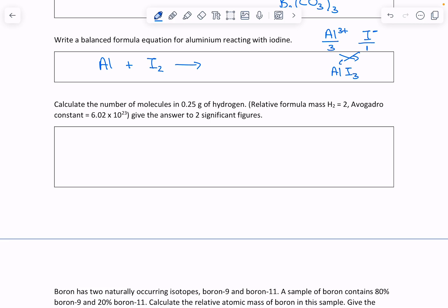Cross them over, so aluminium gets number 1—don't need to write it down—and the iodine gets number 3. So aluminium iodide is AlI3.